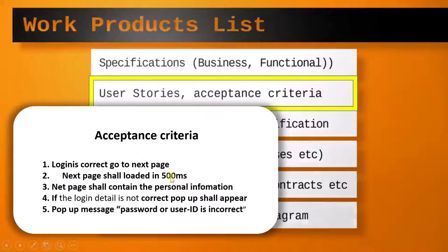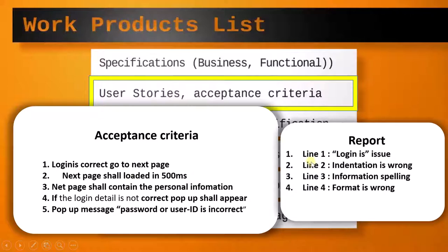When reading this acceptance criteria document, we have to make a report of what is wrong in it. In the first line, there is no space between 'login' and the next word — that is one issue we report by writing it down manually. In the second line, the indentation is wrong because 'next page' starts with an incorrect gap. In the third line, the spelling of 'information' is wrong, and the spelling of 'next' is also wrong.